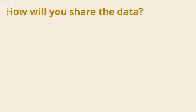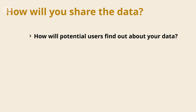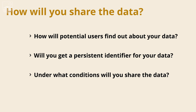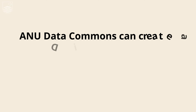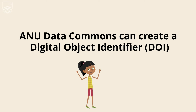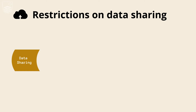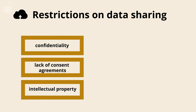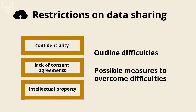How will you share the data? Consider detailed questions on data sharing, such as how potential users will find out about your data, whether you will get a persistent identifier, and under what conditions you will share the data. The ANU Data Commons can create a digital object identifier (DOI) for your datasets — a permanent digital address that ensures your data can be cited consistently. Consider if any restrictions on data sharing may be required, for example due to confidentiality, lack of consent agreements, or intellectual property rights. Always outline any expected difficulties in sharing data, along with causes and possible measures to overcome them.